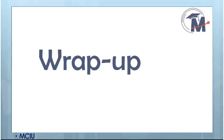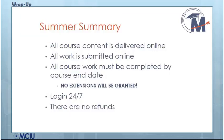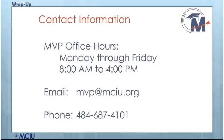Now it's time to get started in your online course. Here are a few more things to remember as we complete this orientation. All information for this program can be accessed at our website, mvp.mciu.org. Here are some final reminders for summer courses: all course content is delivered and submitted online, all work must be complete by the end date for your school, no extensions will be granted, and there are no refunds. Here is the contact information for MVP should you have any questions or concerns.